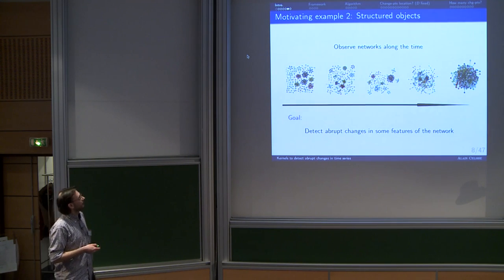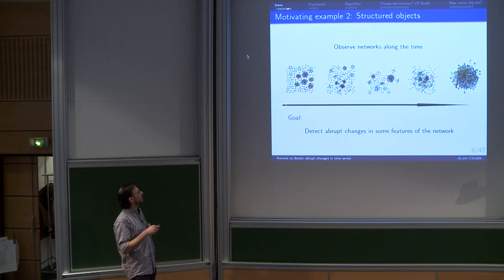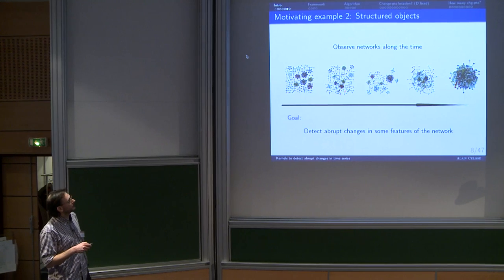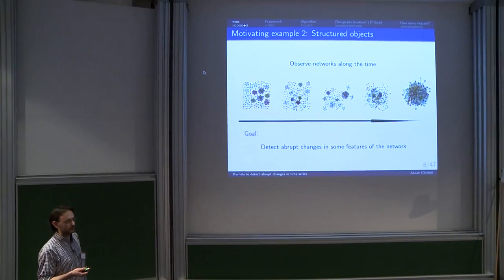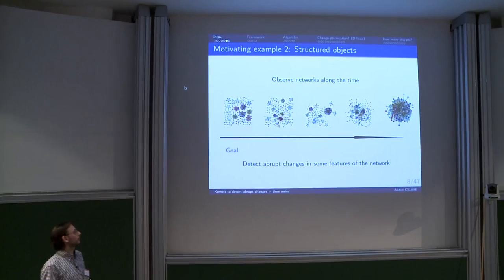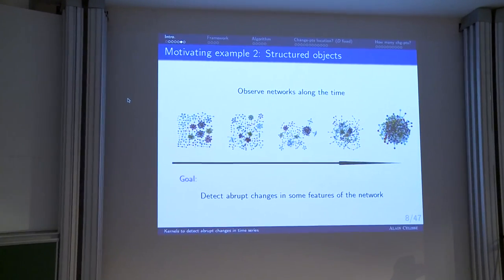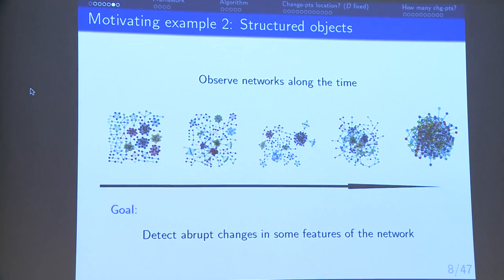Another structured object we would like to deal with is a time series of graphs. Obviously, from time to time the graph changes. But the question is whether this change arises randomly or if it is related to a structural change in the distribution that has generated the graph. We would like to detect abrupt changes in such time series of graphs.